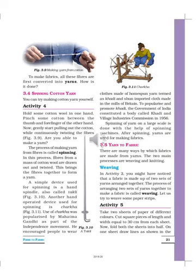You might have seen that a fabric is made up of two sets of yarns arranged together. There are two main processes: weaving and knitting. The process of arranging two sets of yarns together to make a fabric is called weaving.